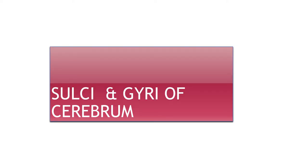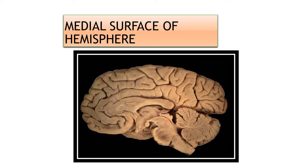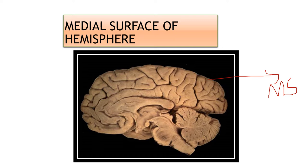Sulci and gyri of the cerebrum — medial surface of the hemisphere. What you are seeing here is the medial surface of the cerebral hemisphere. We will now see the important sulci and gyri on this surface.